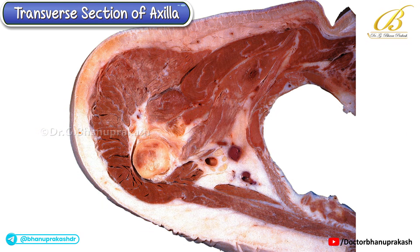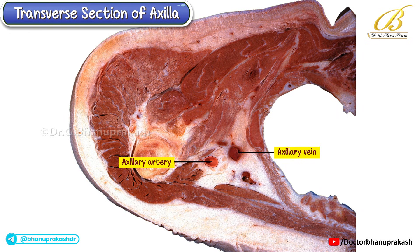Now coming back to the contents of the axilla, we can clearly identify the axillary vessels. The axillary artery lies on the lateral side, while the axillary vein is seen medial to it. Remember this relationship: throughout the axilla, the axillary vein always lies medial to the axillary artery.